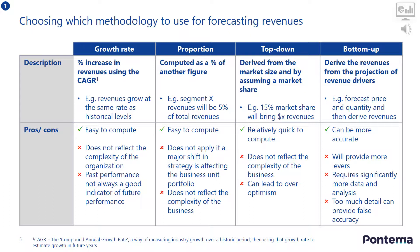The first step in revenue forecasting is to choose which methodology to use. Using growth rates — or more specifically compound annual growth rates — is a way of measuring industry growth over a historic period, then using that growth rate to estimate growth in future years. It is easy to compute, but a downside is that growth rates can ignore the complexities of running an organization, such as seasonal sales variations. Also, past performance is not always a good indicator of future performance. You should only use growth rates in the absence of more accurate data.